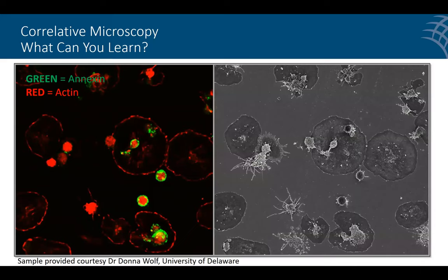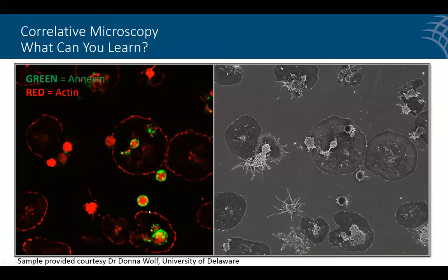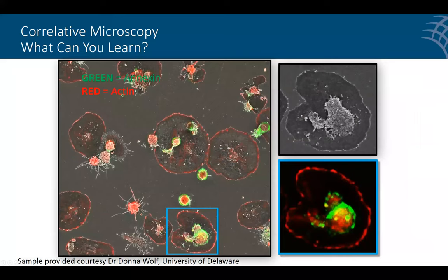Here's a project example where scientists wanted to look at blebs on cell surfaces using SEM. The challenge was that they specifically wanted to know where a probe called Annexin — an indicator for apoptosis — was located. Looking at the fluorescence image on the left, most cells don't have the green probe, and we can't resolve the blebbing. So we combined fluorescence imaging and then relocated the same exact area in the SEM to look at membrane surface blebbing phenomena. One technique alone wasn't enough.